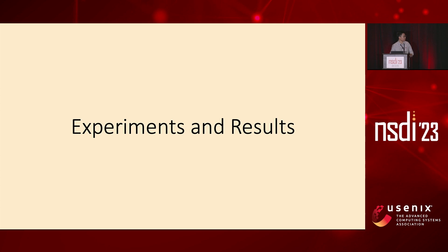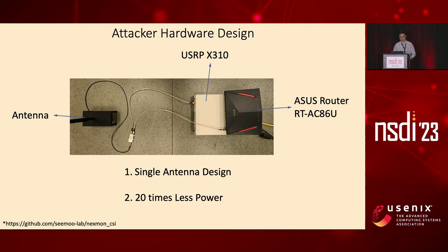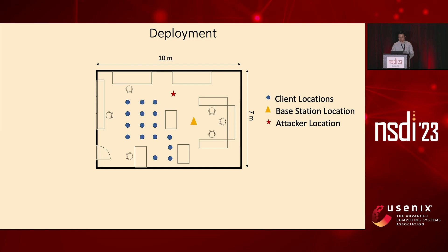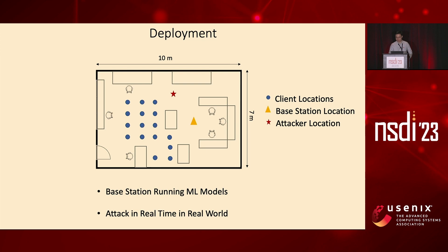With Robust Wireless UAP, we managed to cause errors at the base station despite not knowing the channel value and despite the distortion. Now I've covered the major algorithm of RAFA. I will talk about our hardware-driven experiments and results. Our attacker hardware consists of a single antenna, a USRP, and a router. We transmit 20 times less power compared to the client. During our deployment, we place the client at 16 different locations shown on blue dots, the custom base station at the yellow triangle, and the attacker at the red star. Our base station runs machine learning models in real time, and we attack them in the real world.